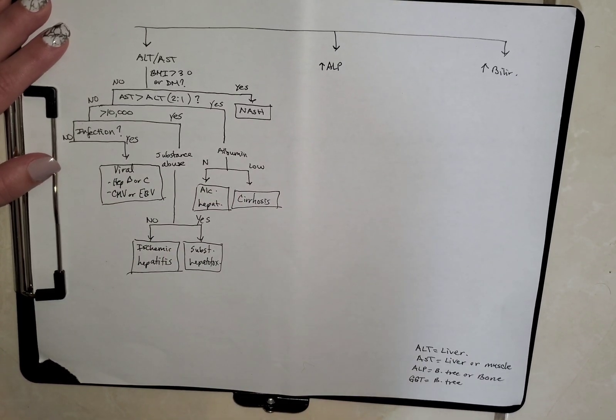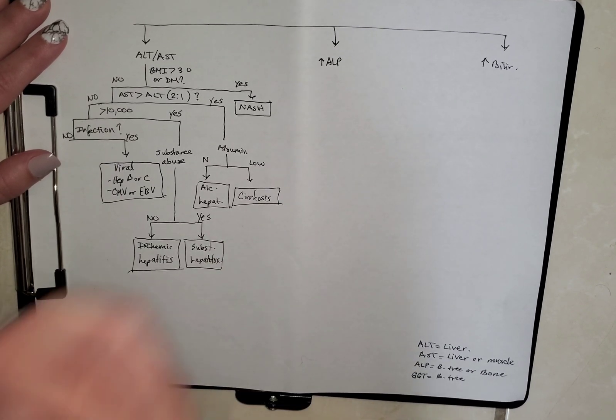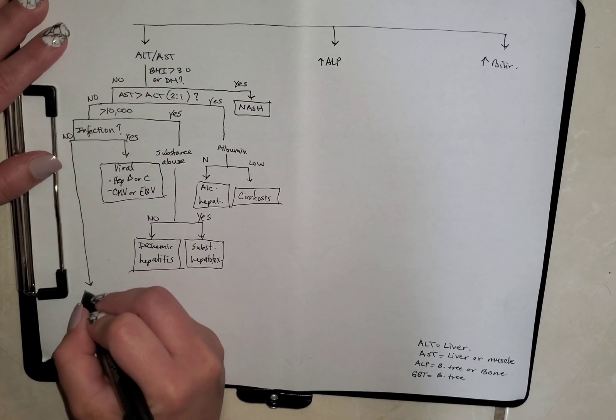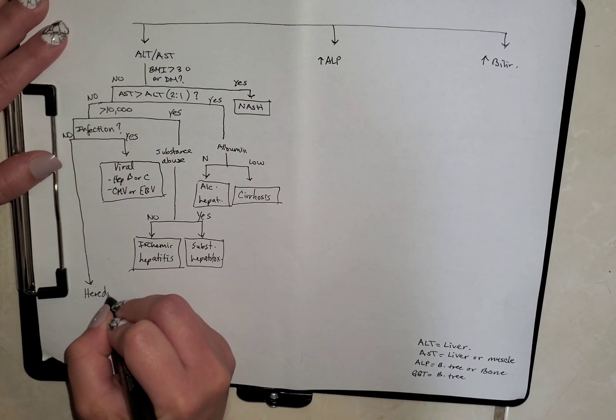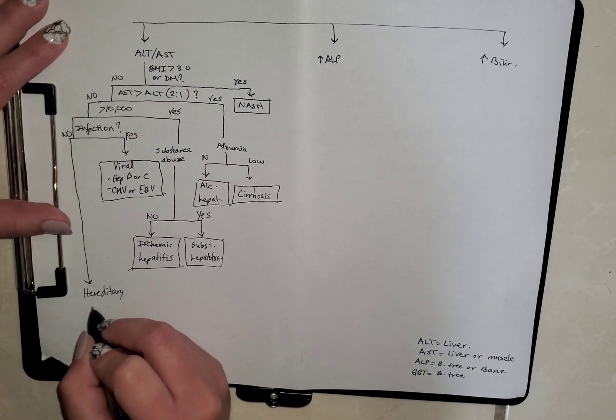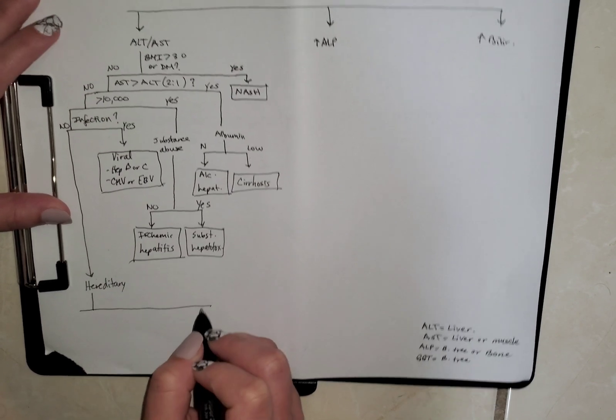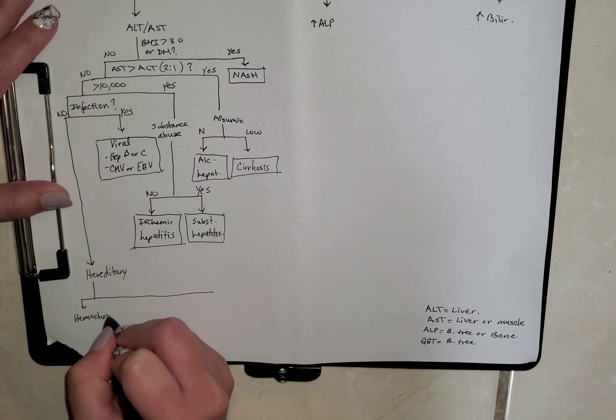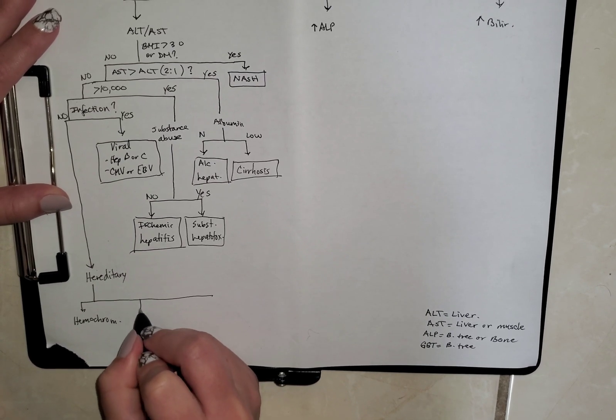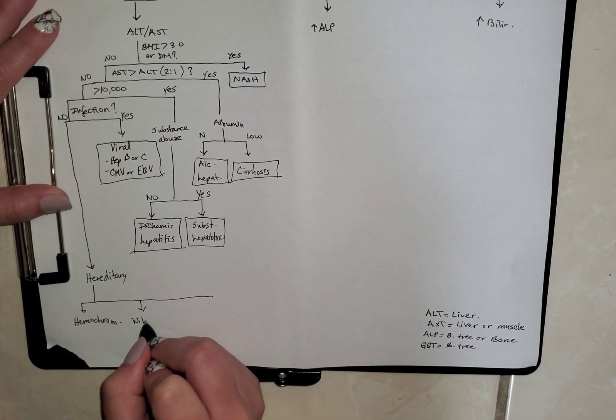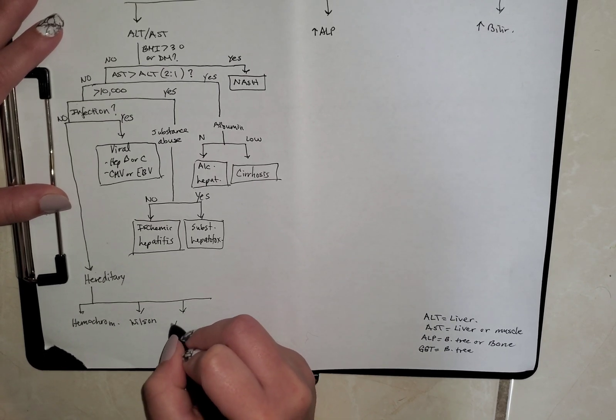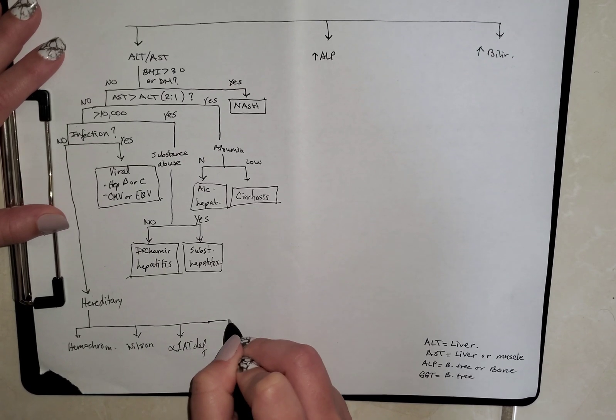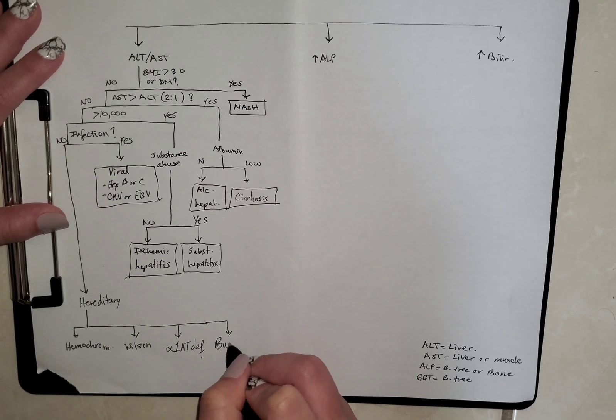And lastly, we're going to look at whatever's left, which most likely will be hereditary. And these can include things like hemochromatosis. It can be Wilson's disease. It can be alpha-1 antitrypsin deficiency. Or it could be something like Budd-Chiari.